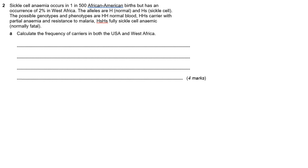So in question 2, there's an awful lot of information and it's 4 marks. When you look through all the information, it tells you about different phenotypes and genotypes and everything else. But when it gets down to the actual question, it says calculate the frequency of carriers for both of the two locations. Again, back to Hardy-Weinberg, we're just trying to calculate 2PQ. They have to give you one of those numbers in advance, and in this case they have given us a value for Q for both locations.